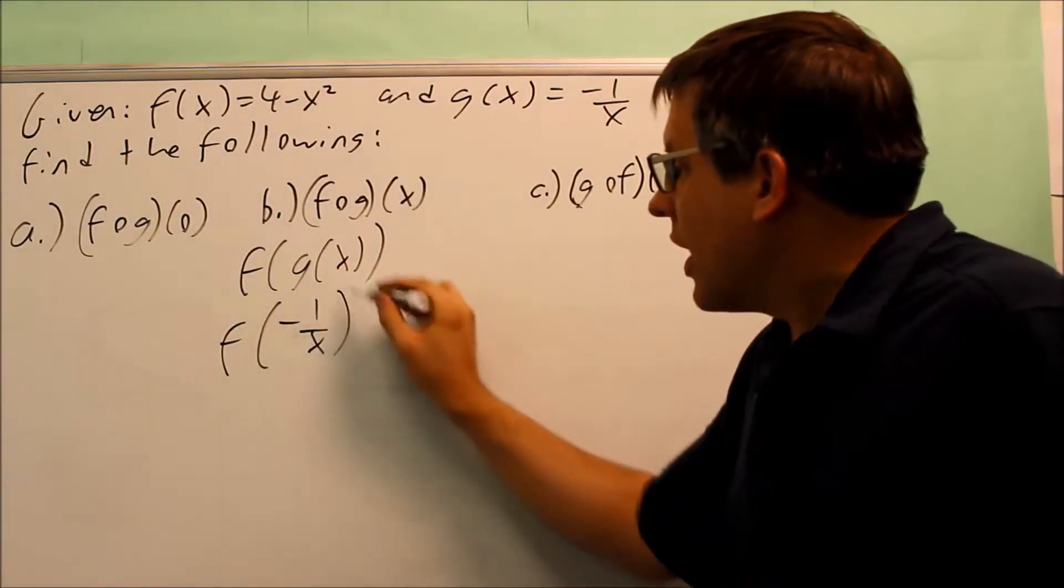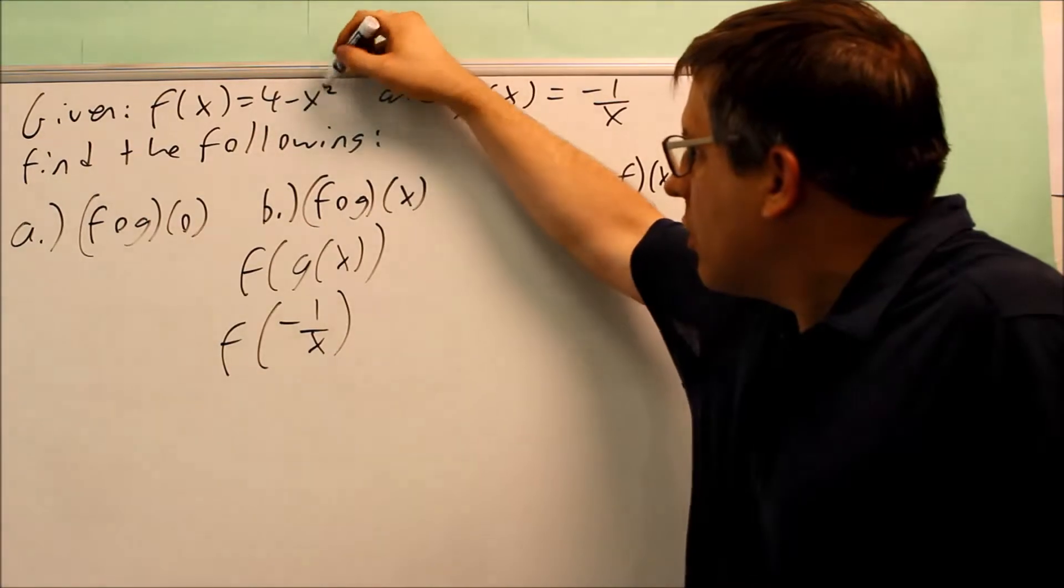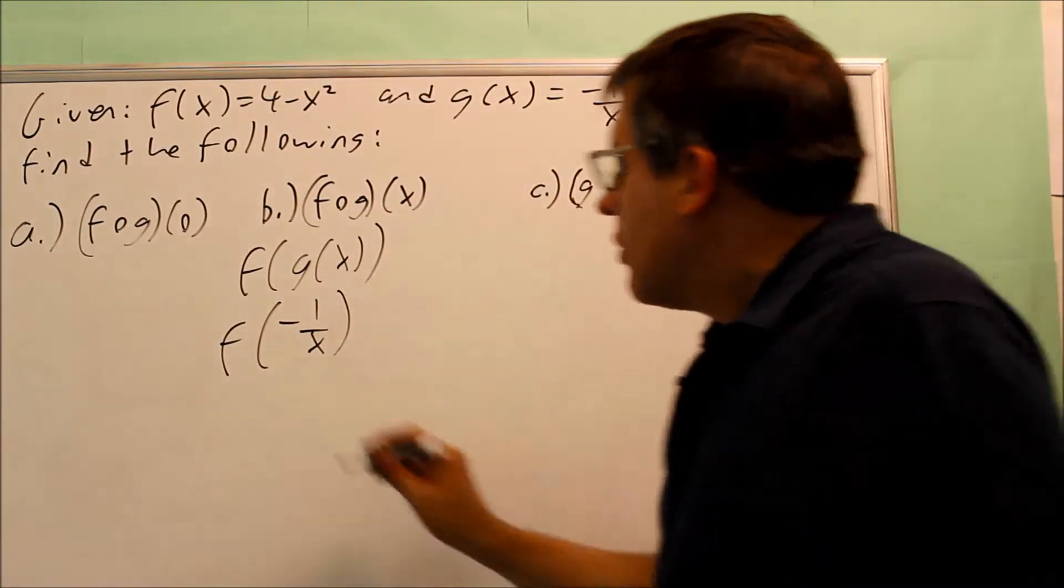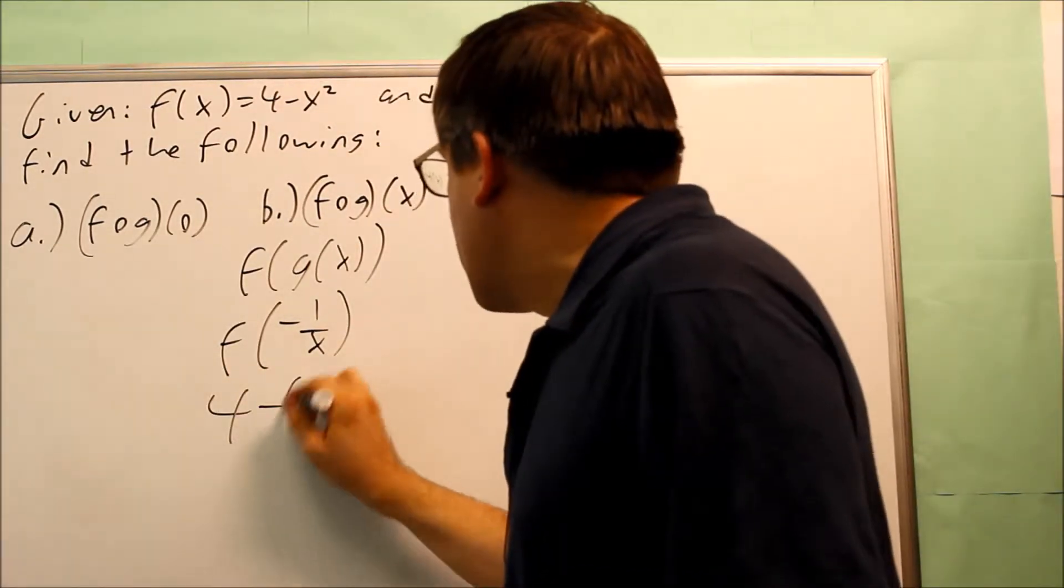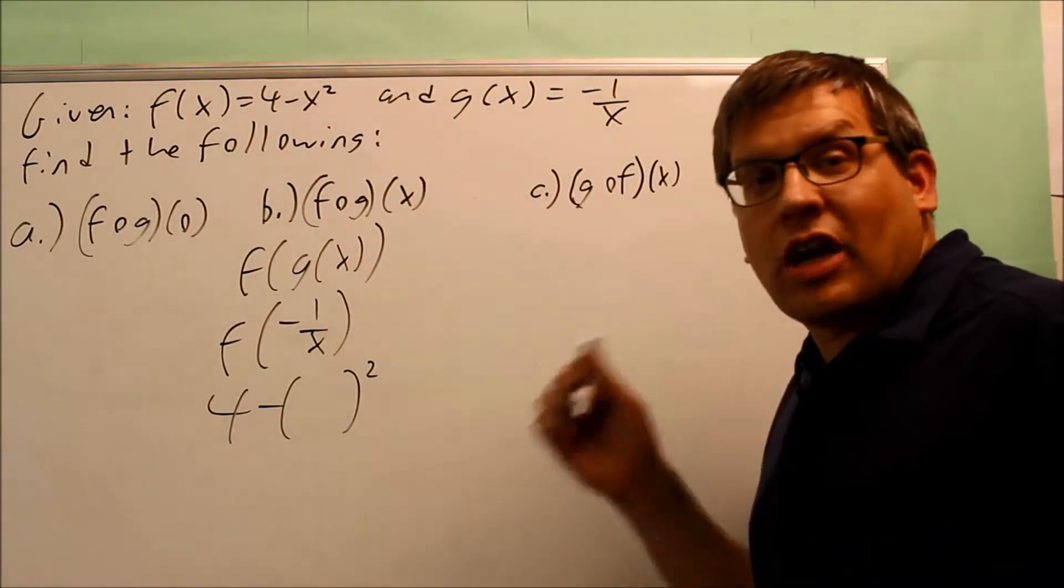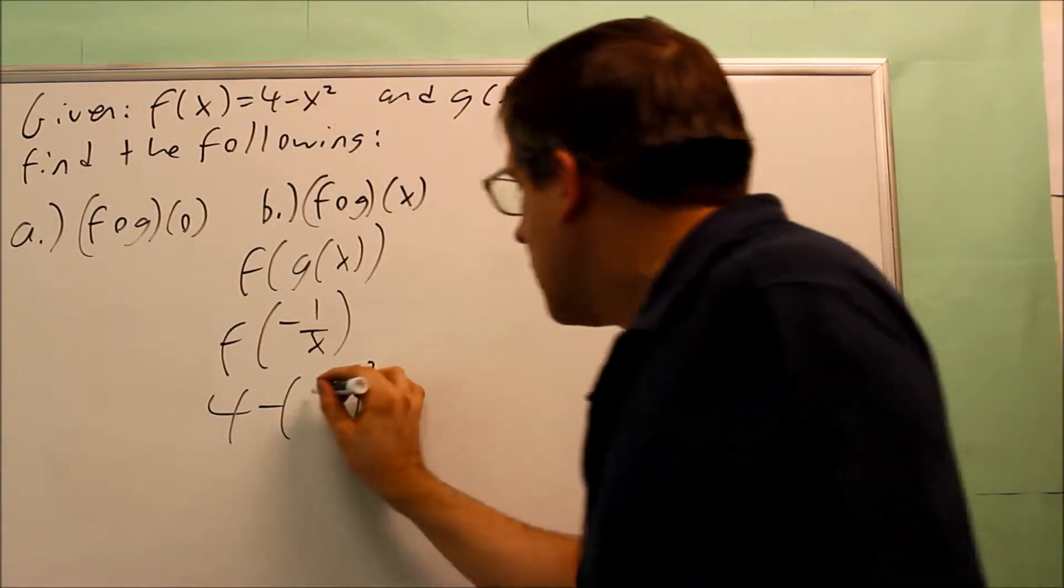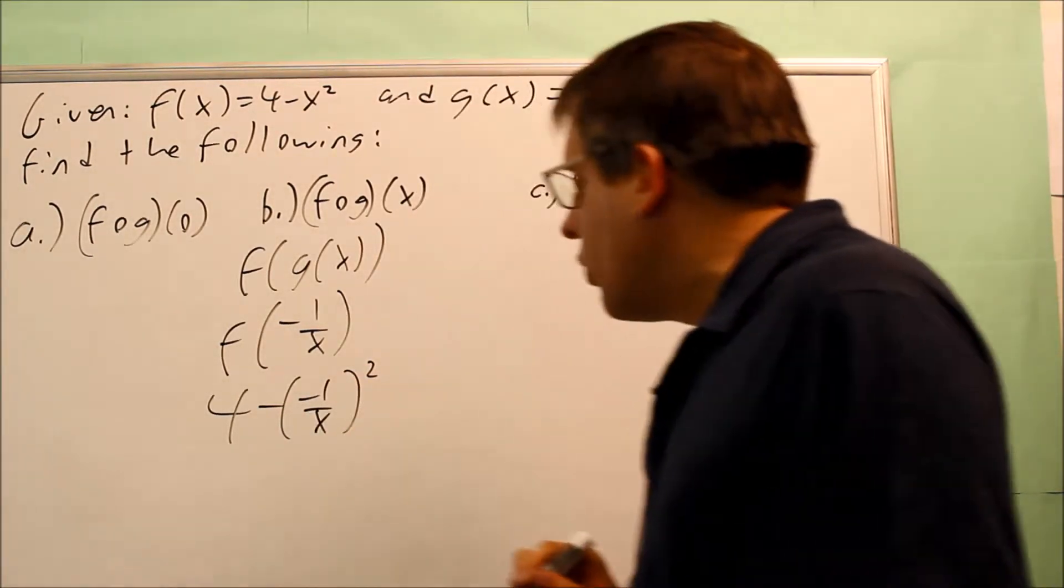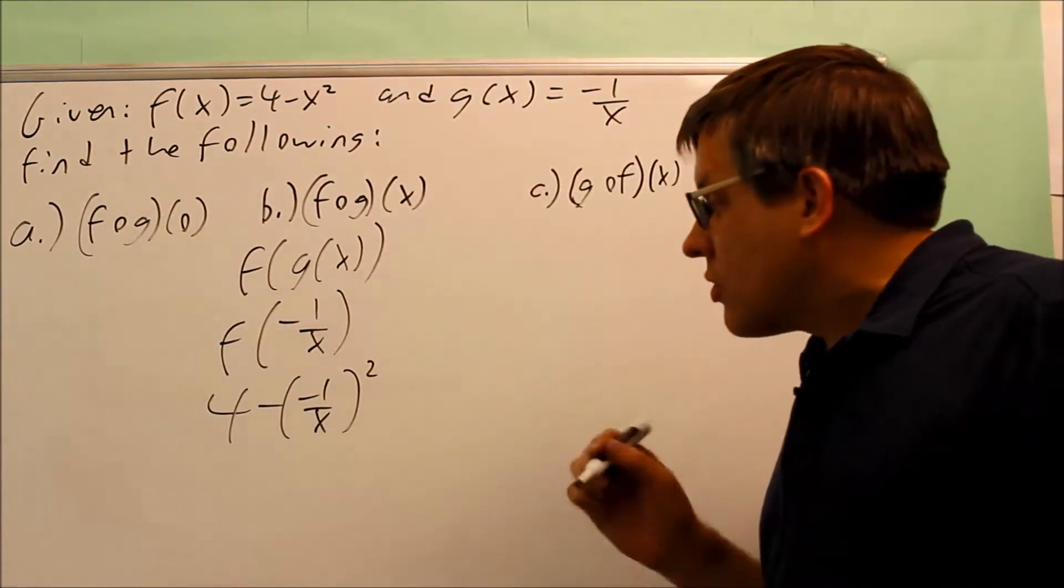So I have f of negative 1 over x. That's telling me I've got to put negative 1 over x into here for that x. That's going to give me 4 minus, I have something squared. That would be that expression without the x in it, and I would get this. That blank gets filled in with negative 1 over x.